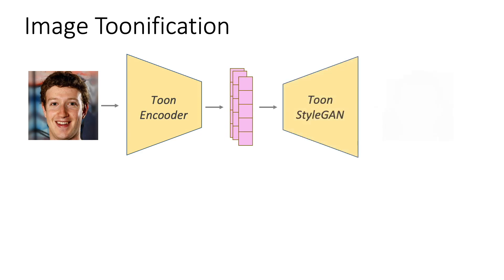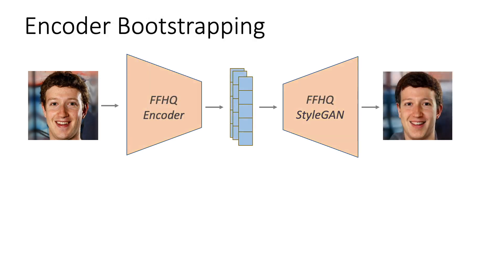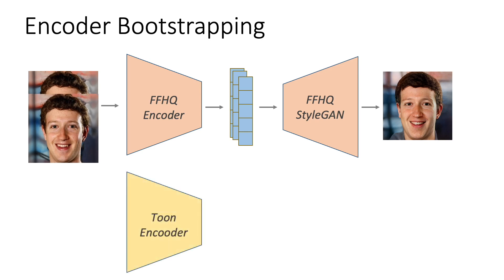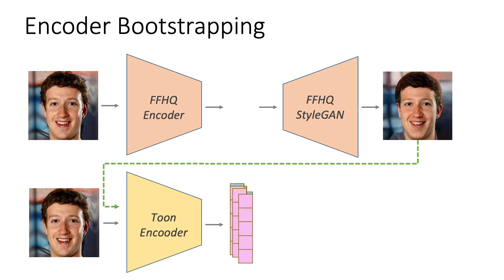Finally, we demonstrate how the residual nature of ReStyle can be used on additional applications such as image toonification. Here, we want to train an encoder to map a real image to its animated version using StyleGAN and a real-to-toon encoder. However, this requires the encoder to capture both the input identity and toonify style. To address this, we propose an encoder bootstrapping technique. We first use ReStyle on an encoder for real faces to get an accurate inversion of the input identity, and then use this inversion to bootstrap or initialize the toonification process. We pass the original input and reconstruction to our toonify encoder and add the initial inversion to the resulting latent code to obtain our final toon latent code.